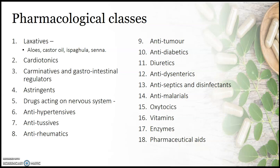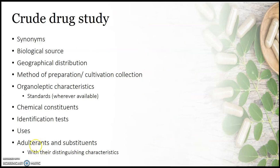Aloes, castor oil, isabgol, and senna. In our book, the detailed examples are mentioned. The crude drugs mentioned in each class and their different classifications are going to be studied in the following manner.